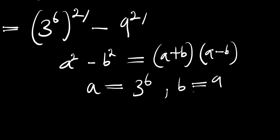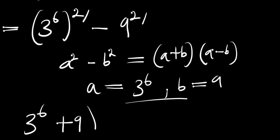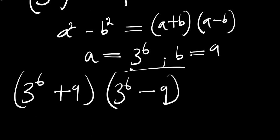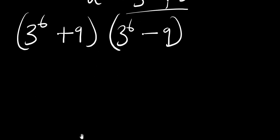In this case, a equals 3 raised to the power of 6 and b equals 9. So if we insert this for a and b, we are going to have 3 raised to the power of 6 plus 9, times 3 raised to the power of 6 minus 9.